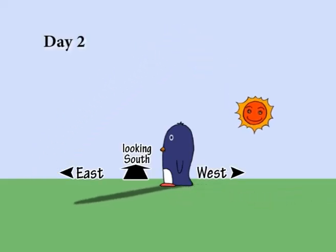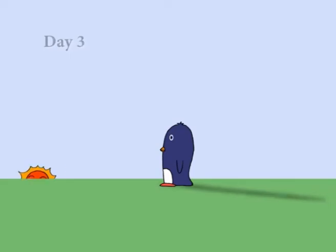Shadows change in a similar way every day, as the sun daily appears to rise in the east and set in the west. The higher the sun appears in the sky, the shorter the shadow.